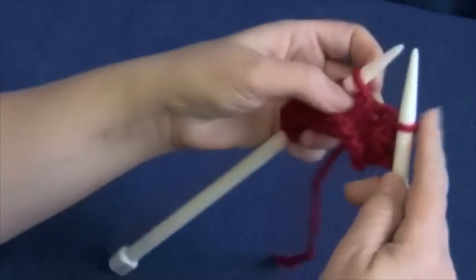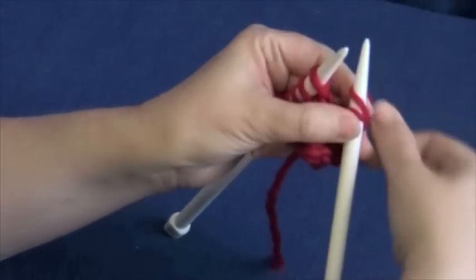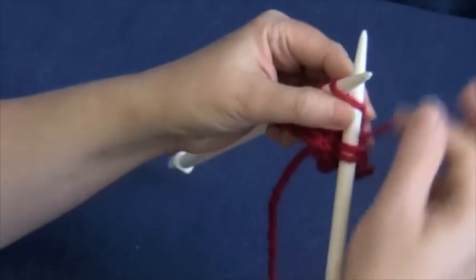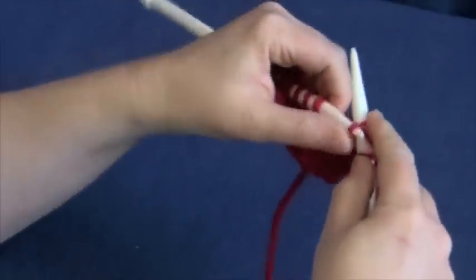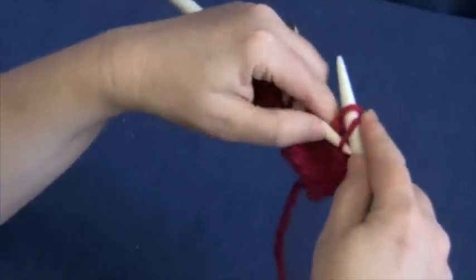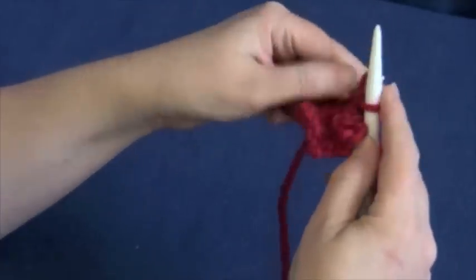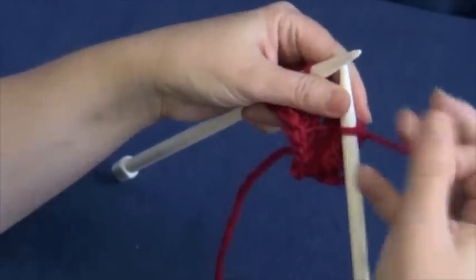We have one stitch left on the needle, so it's time to yarn over. That's a purlwise yarn over, or the normal yarn over before a purl stitch. Drop the yarn over over the top and then drop the stitch.